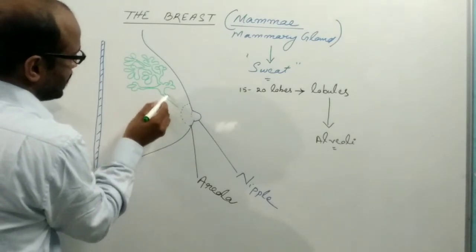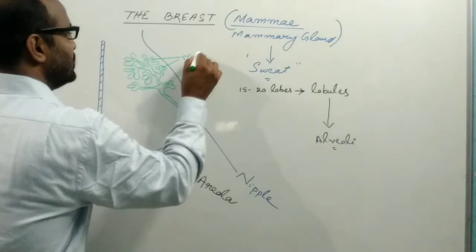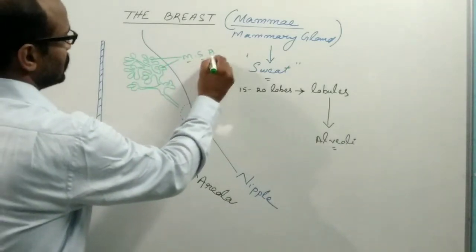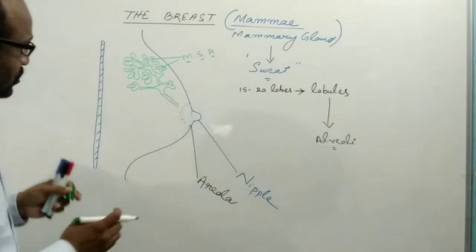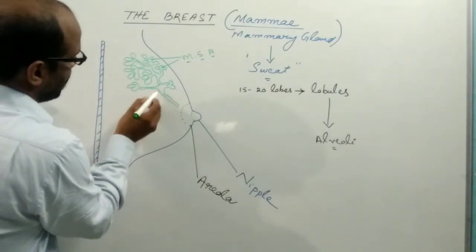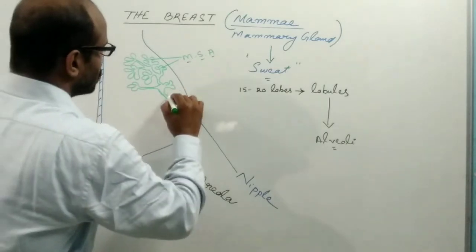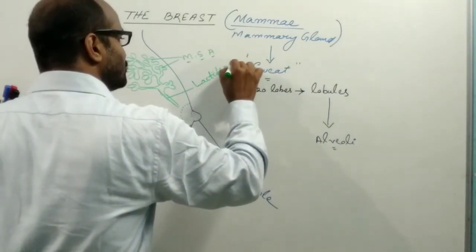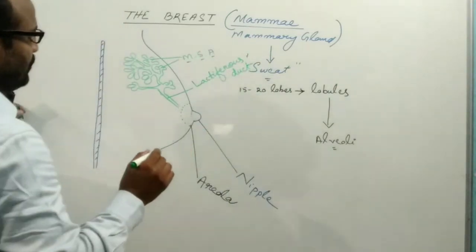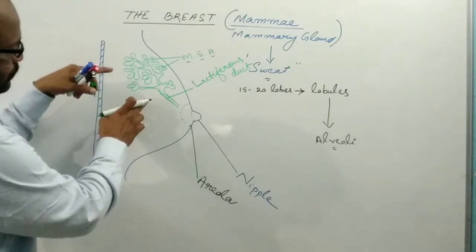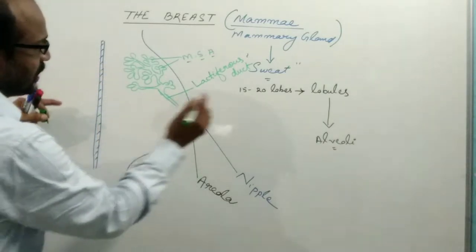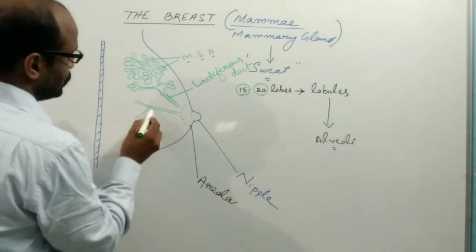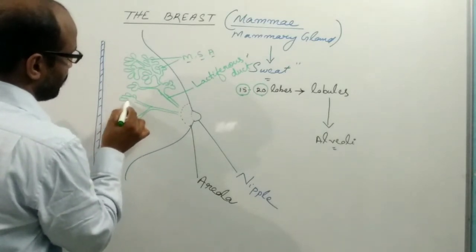These are the milk-secreting alveoli, which form a rounded grape-like cluster. All alveoli open into the milk-secreting duct, known as the lactiferous duct. The lactiferous duct drains the lobe. Since there are 15 to 20 lobes, there are also 15 to 20 lactiferous ducts.